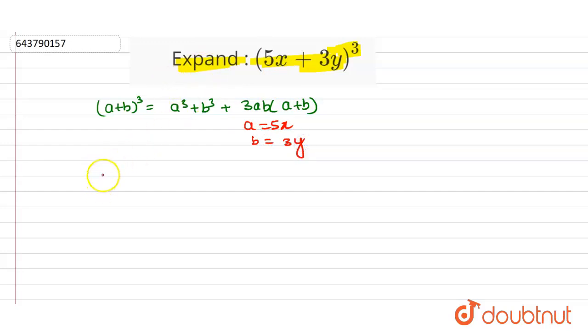Now we can write (5x + 3y)³ is equal to a³, so a is 5x, so 5x cube, plus b³, that is 3y, so 3y cube, plus 3ab, that is 5x into 3y, into (a + b), that is (5x + 3y).